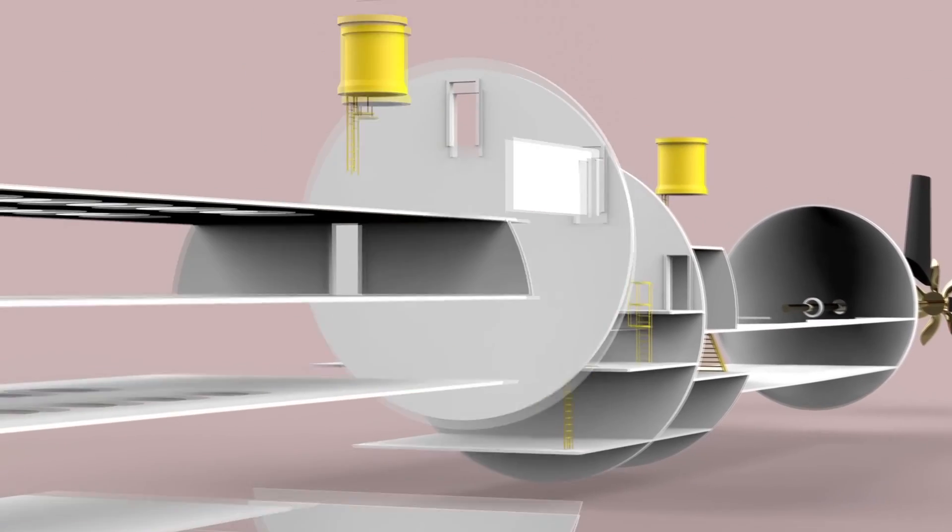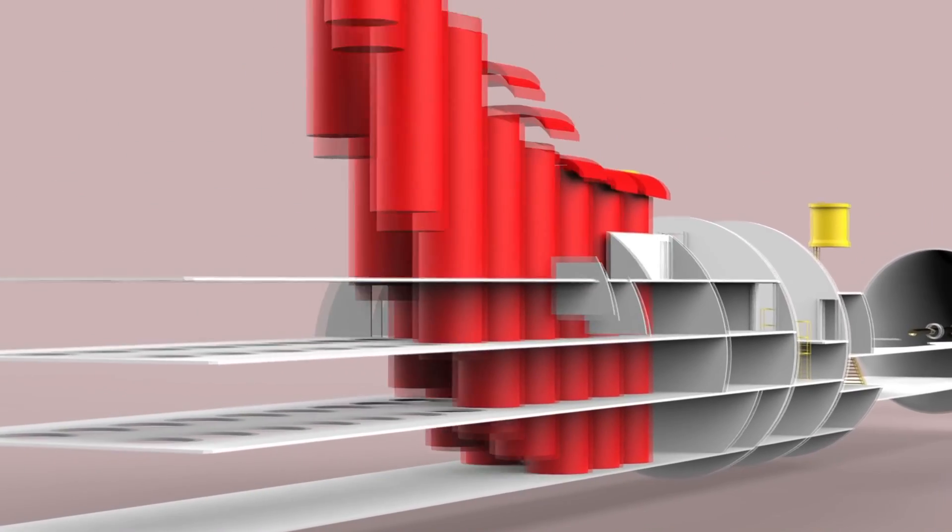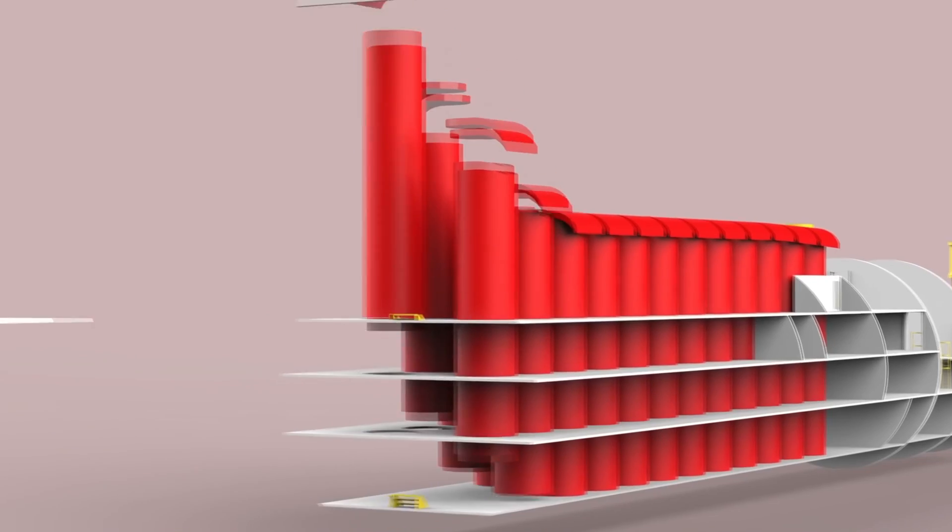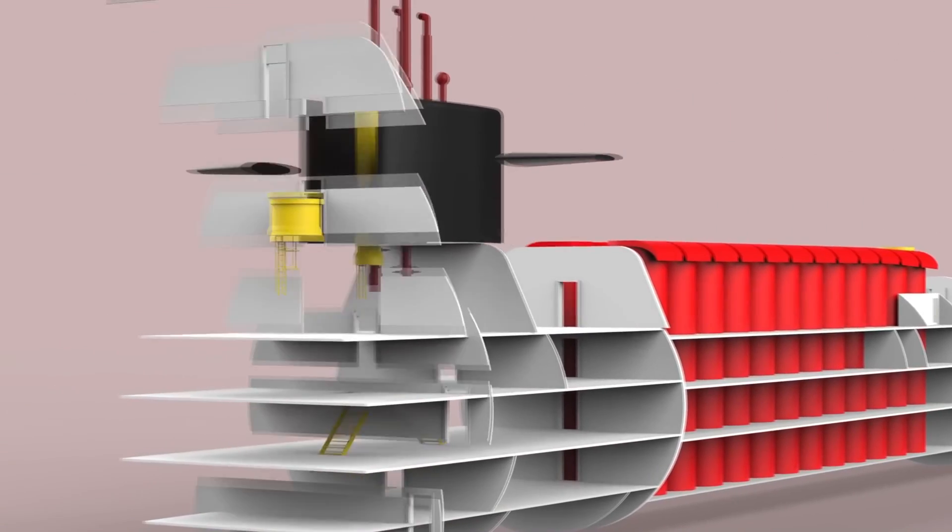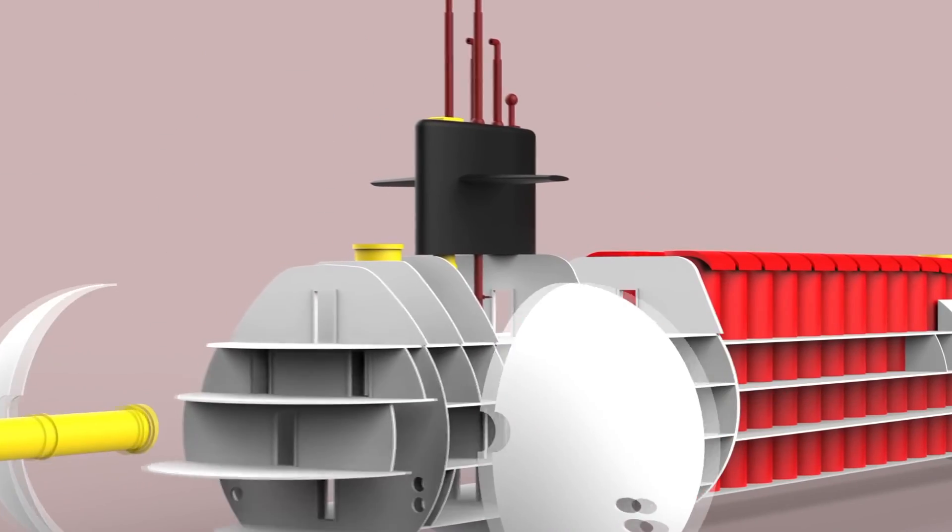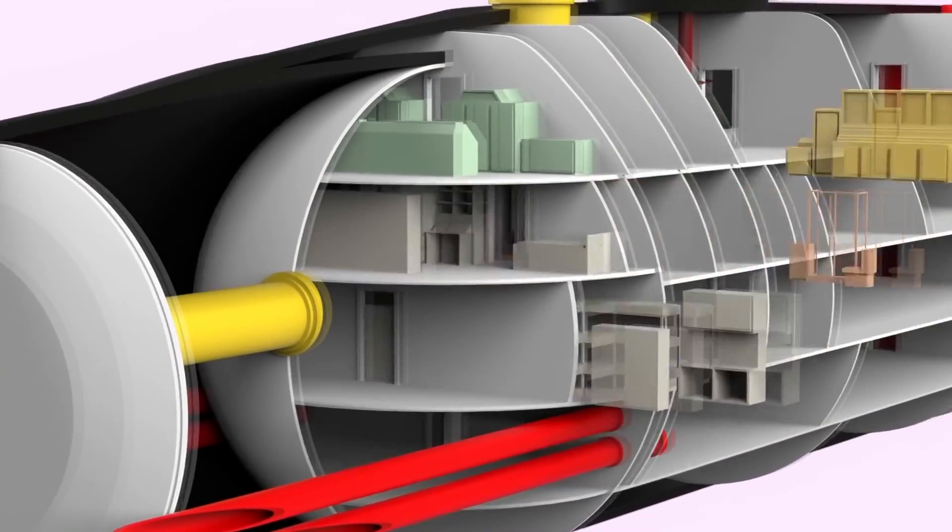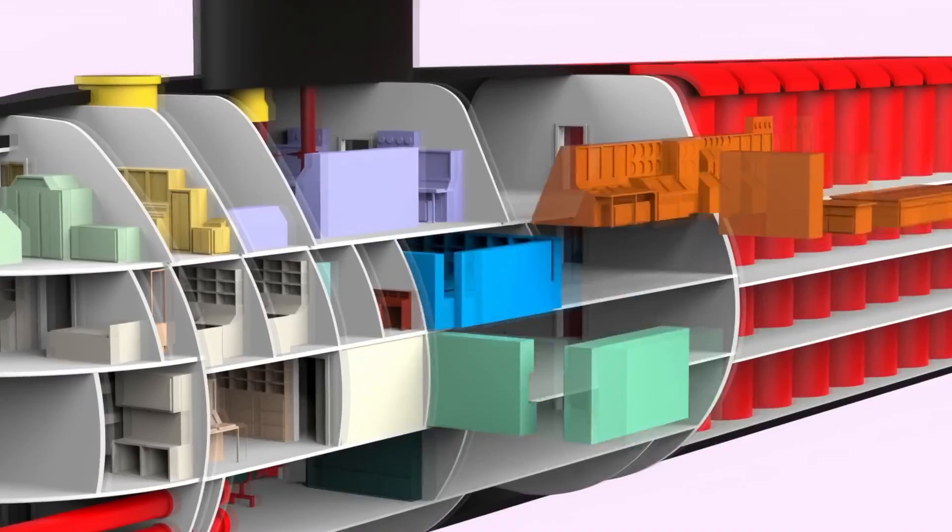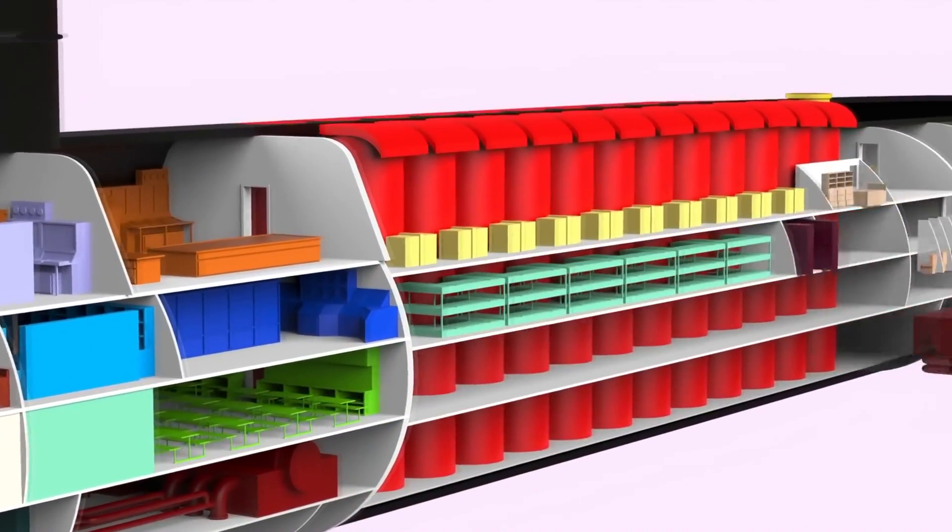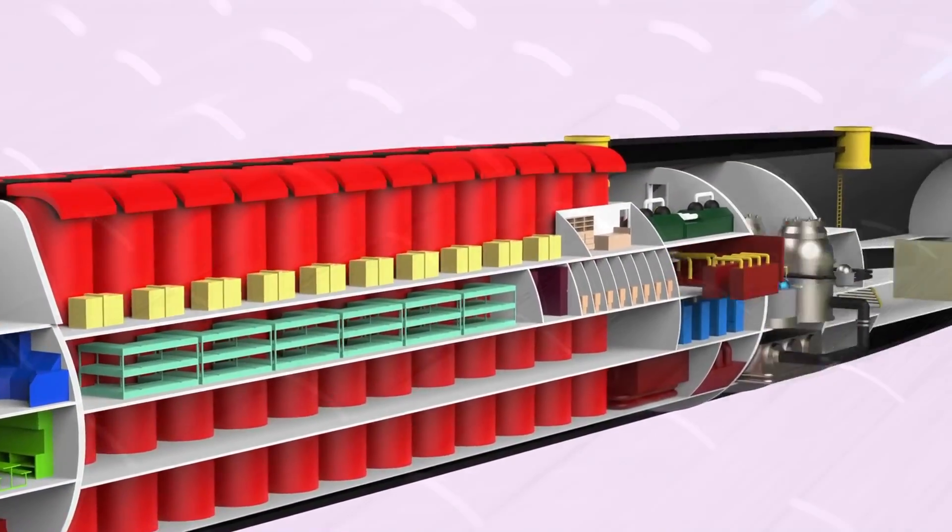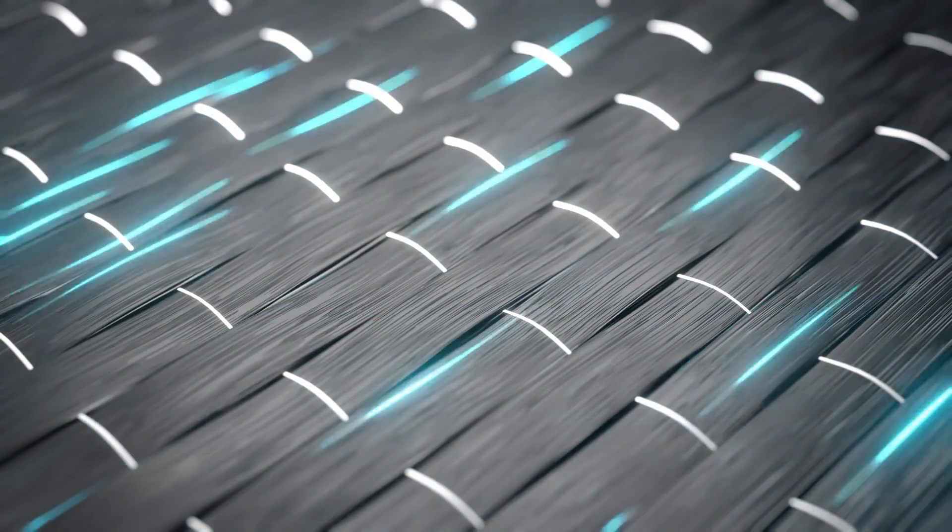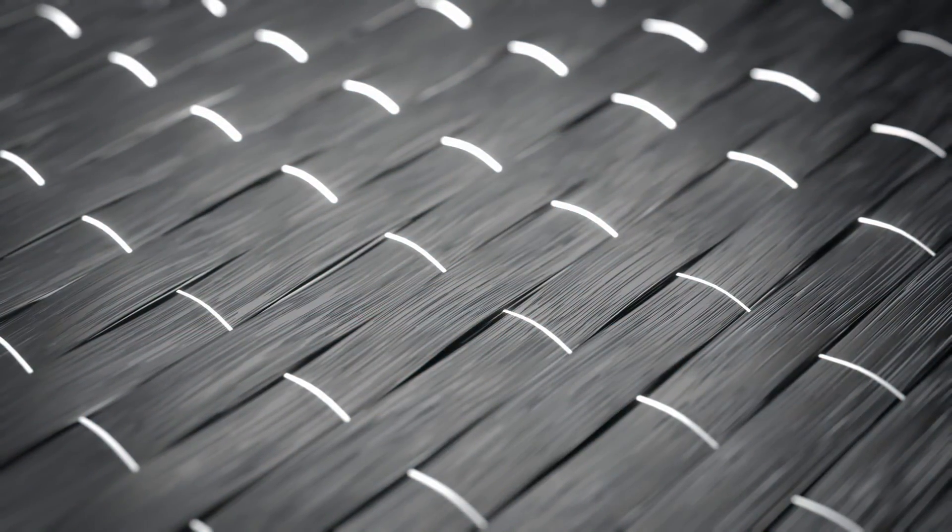Submarines often use inertial navigation systems, which track motion from a known starting point using gyroscopes and accelerometers. This system is very useful for submarines operating in deep water where GPS signals cannot penetrate. Like submarines, spacecraft also use inertial navigation systems to determine their motion. Given the lack of atmospheric or oceanic drag in space, these systems can be highly accurate over long periods of time.